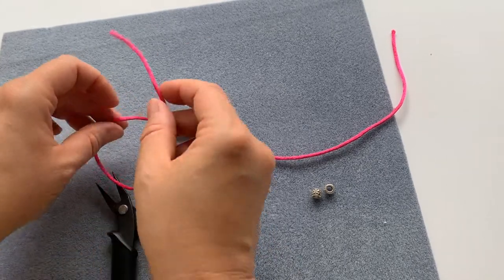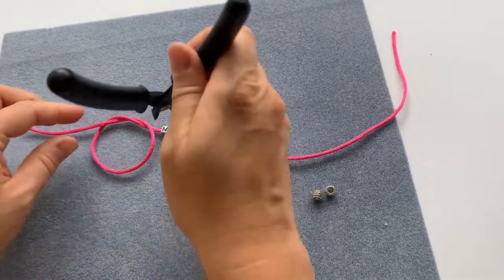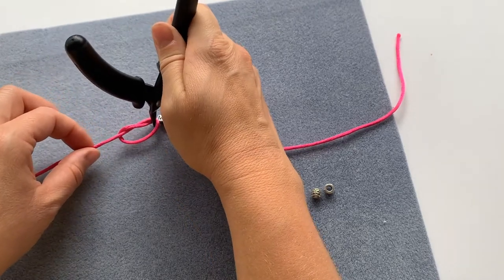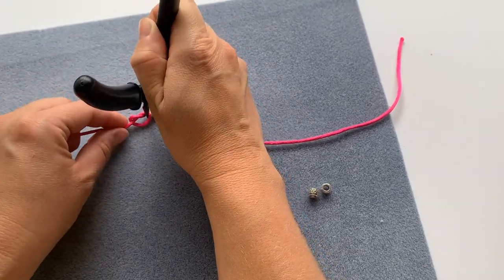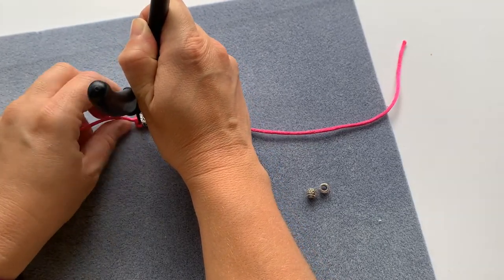So doing my overhand knot and this time I'm just positioning my pliers in the center of the knot as I pull it tight, and that way that keeps it up tight to the beads so I don't have a huge gap between my beads and my knot.